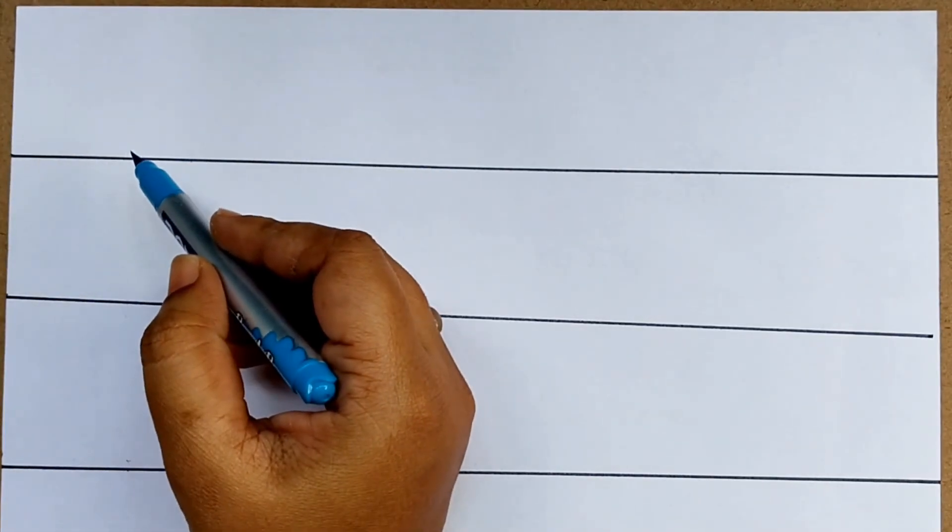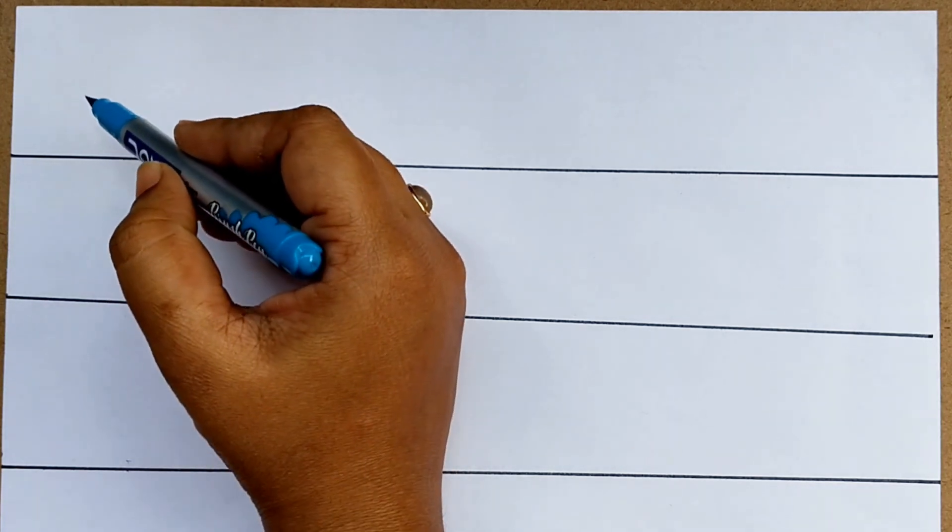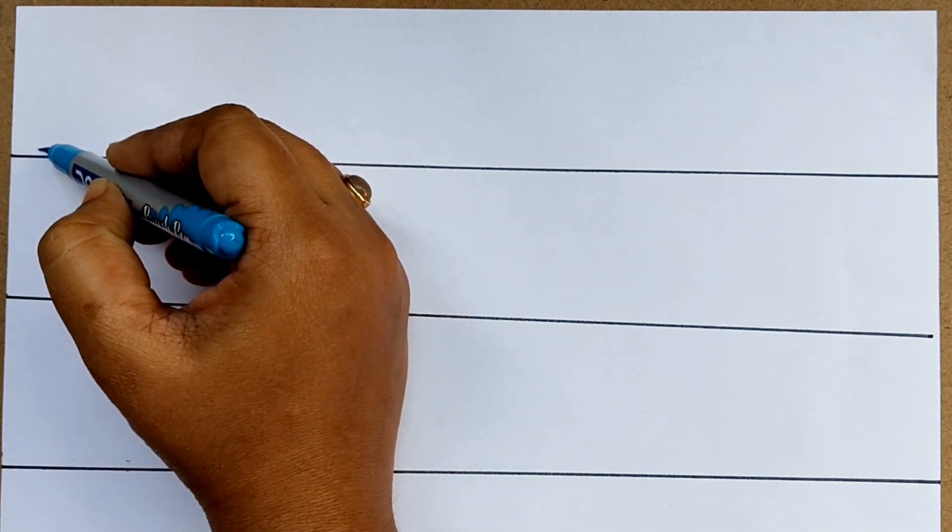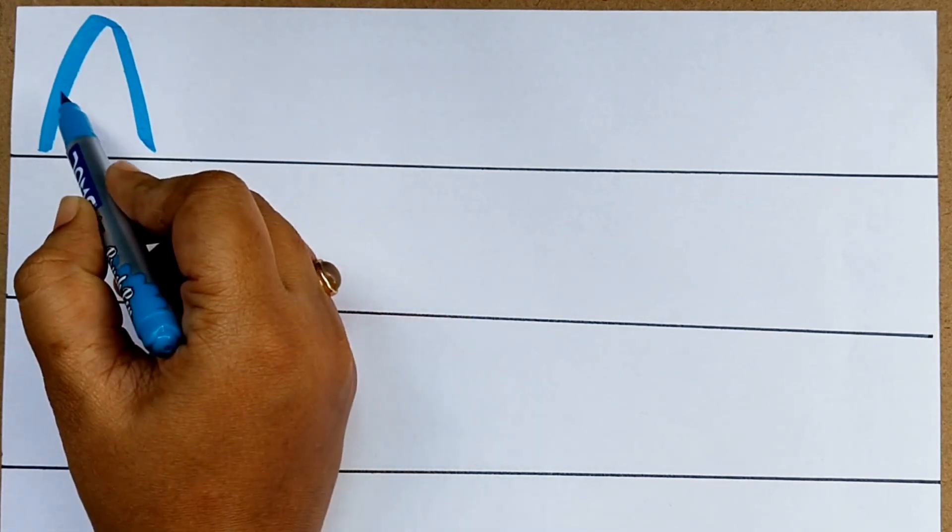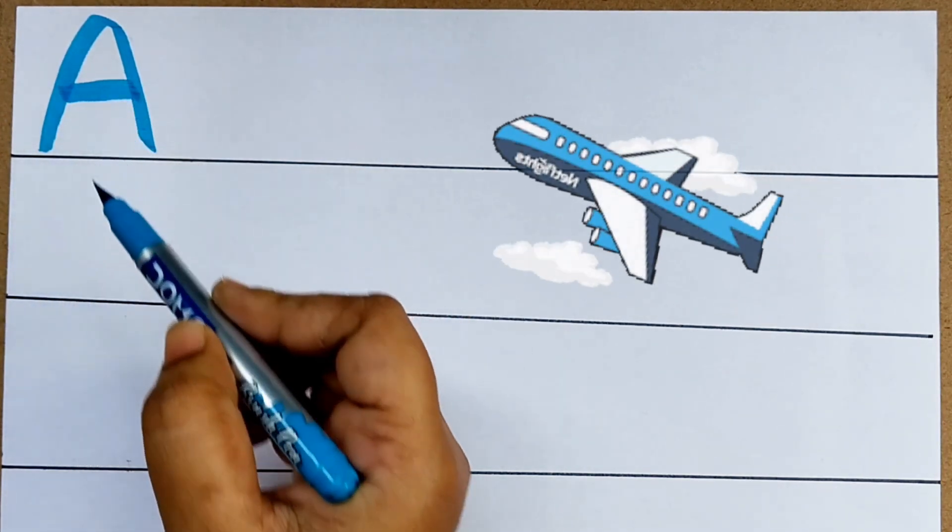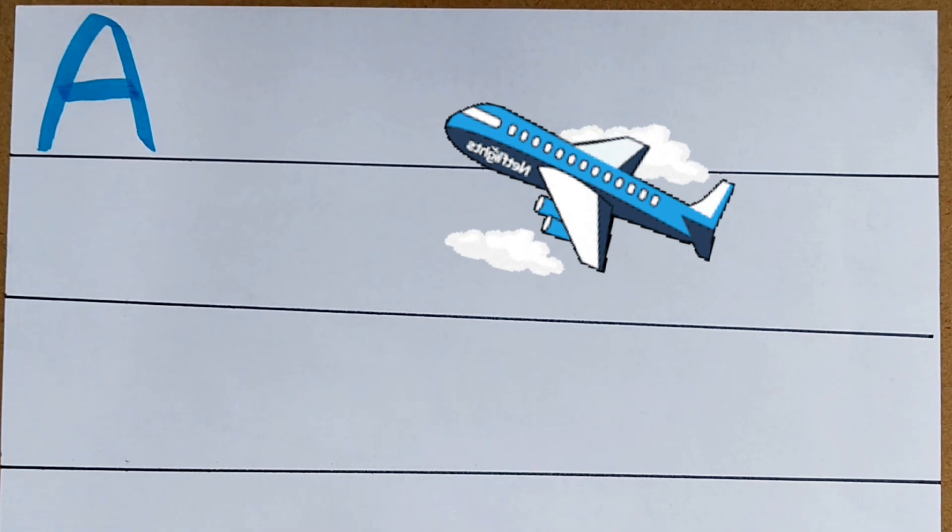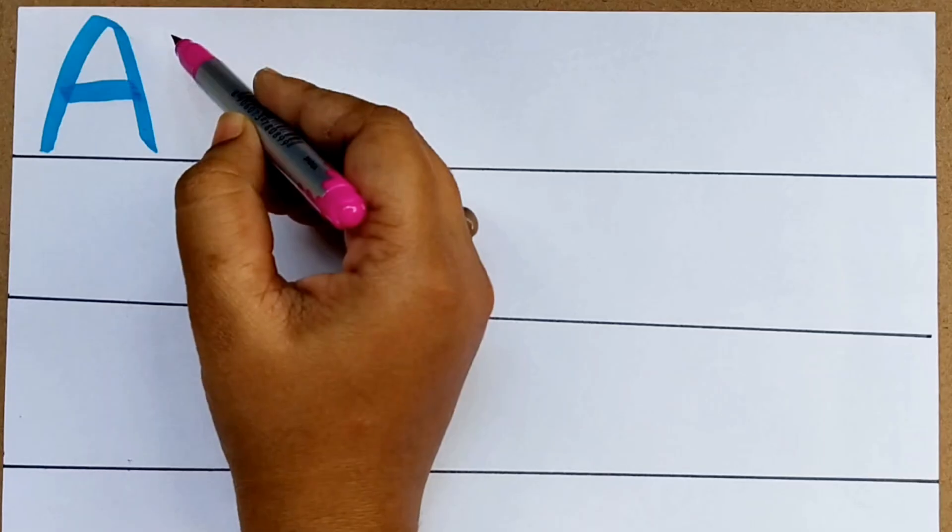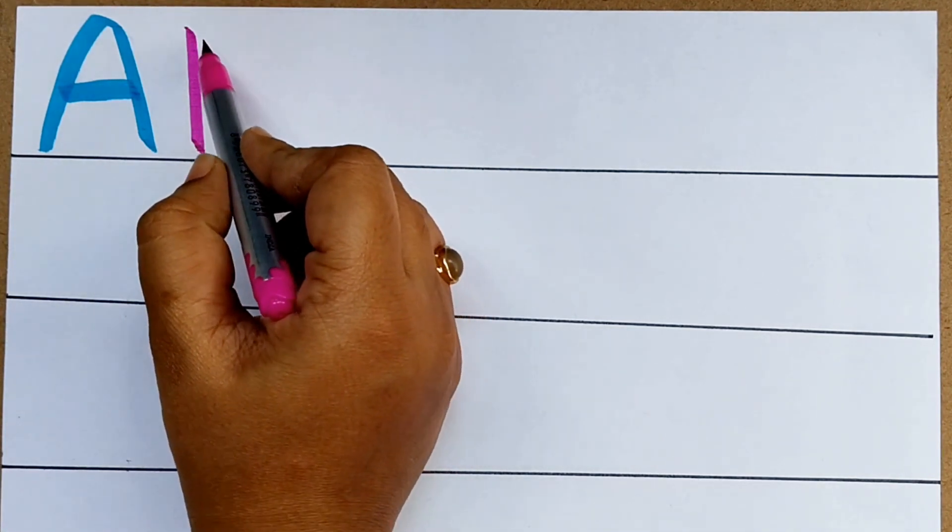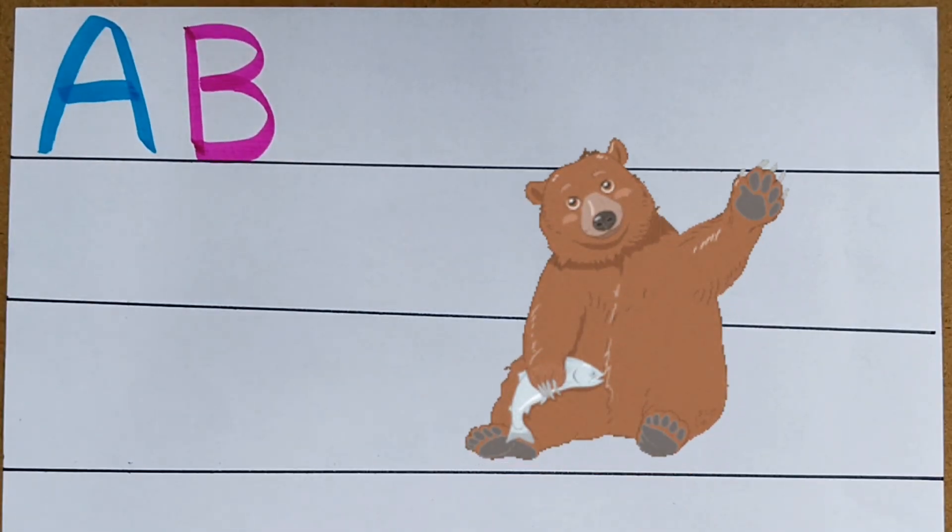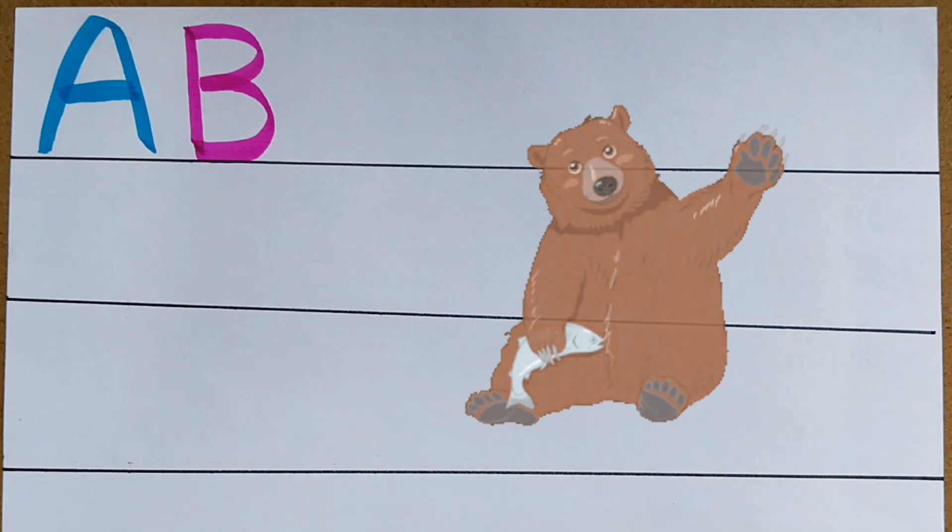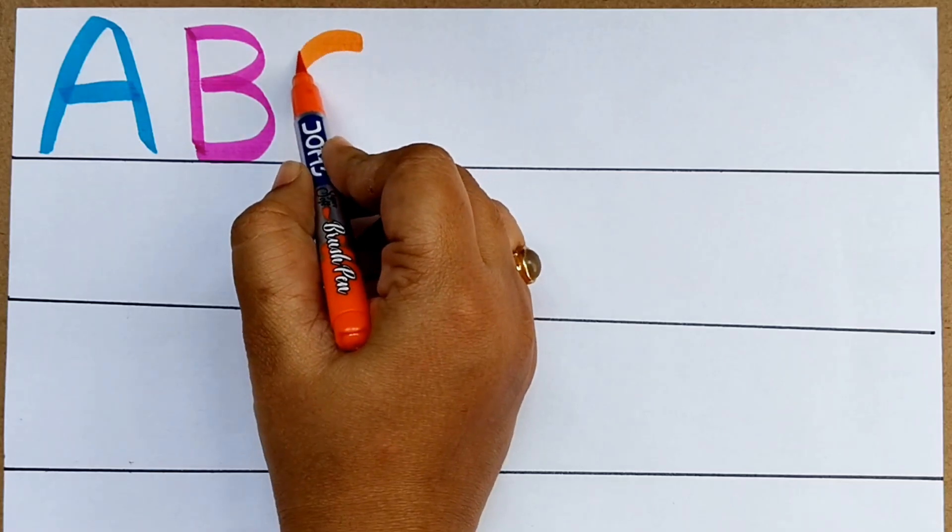Let's write alphabets. Start with A. The letter A. Come on, guess what it is. That's an aeroplane. A for aeroplane. B. Wow, that's a bear. B for bear.